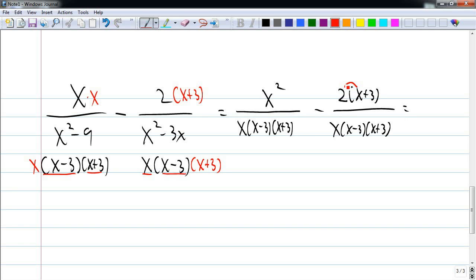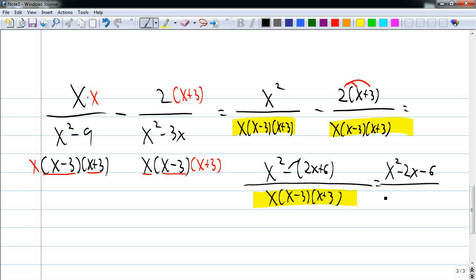Let's keep on working it out. I need to distribute this, and I might as well write this as a single fraction while I'm at it. My denominator is x times x minus 3 times x plus 3 because I just copy my common denominator. My numerator is x squared minus 2x plus 6.